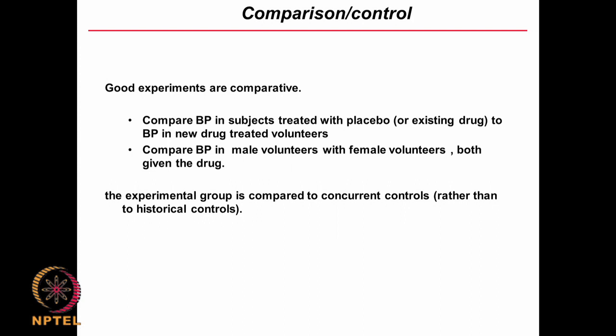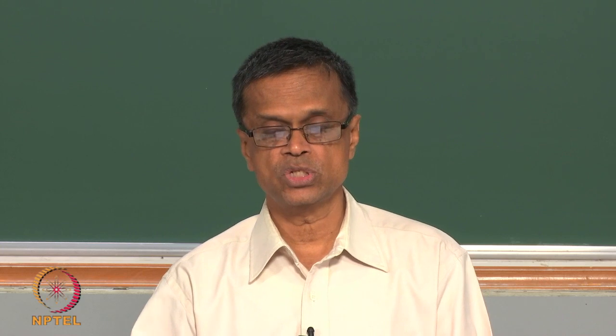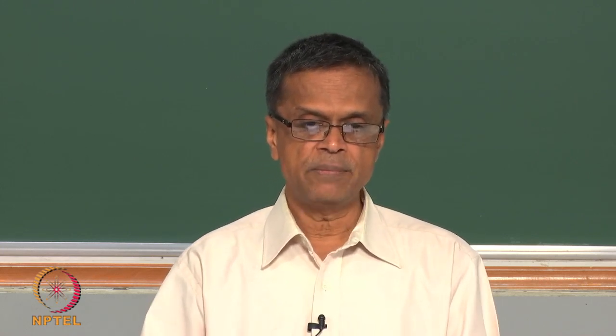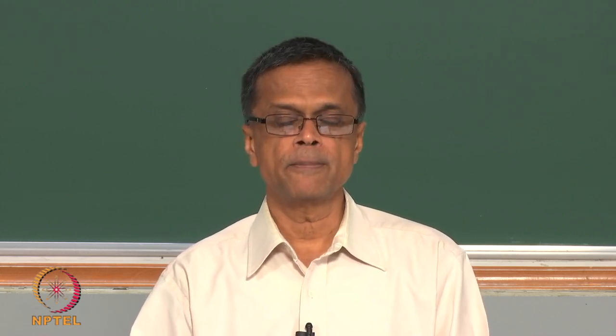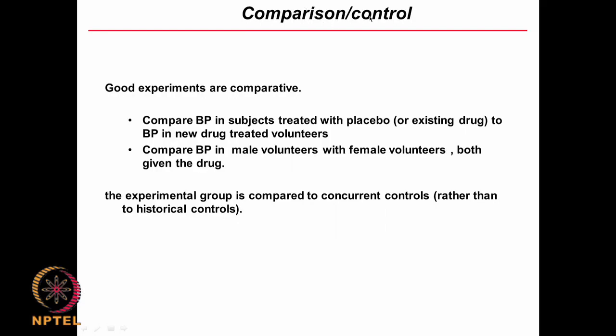Never compare with historical controls — that is not a very good idea unless you have no alternative. For example, if you want to study how lifespan has increased from about 40 years in the 19th century to almost 70 years today, you cannot get volunteers from the 1800s. In such situations of course you have to use historical controls, but otherwise it is always a good idea to have concurrent controls — be it placebo, old drug, old assay, or existing volunteers.